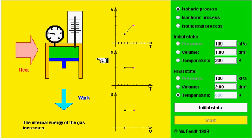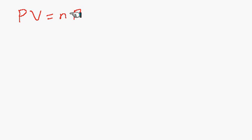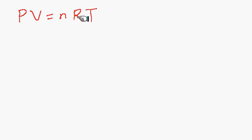In this simulation we will look at the various thermodynamic processes. As you know, the ideal gas law describes the variables P, V equal to nRT. So P, V, and T — the pressure, volume, and temperature — are the macroscopic variables which describe the state of the gas. N is the number of moles of gas present in the container and R is the universal gas constant, which tells you how much energy per mole per kelvin is present in the gas.